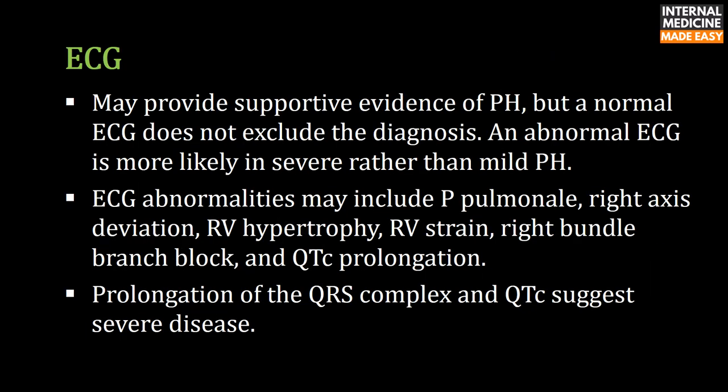ECG may provide supportive evidence of pulmonary hypertension, but a normal ECG does not exclude the diagnosis. An abnormal ECG is more likely in severe rather than mild pulmonary hypertension. ECG abnormalities may include P pulmonale, right axis deviation, right ventricular hypertrophy, right ventricular strain, right bundle branch block, and QTc prolongation. Prolongation of the QRS complex and QTc suggest severe disease.